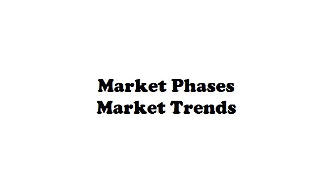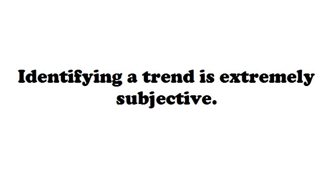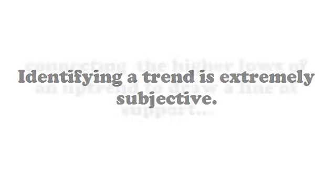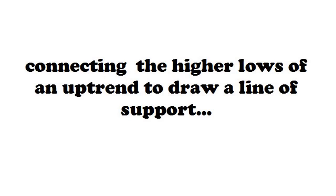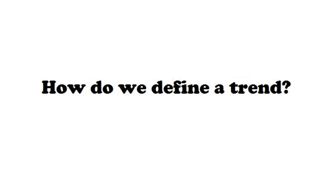Market Phases or Market Trends are related back to one of the basic themes of Dow Theory. The way that traders are in touch with the bullishness or bearishness of the market has to do with the way they gauge the trend. In terms of identifying a trend, it is extremely subjective. You could connect the higher highs of an uptrend to draw an uptrend line, or connect the lower highs of a downtrend. But the bottom line is, how we define a trend is oftentimes very subjective.